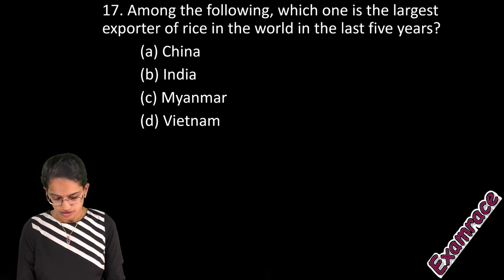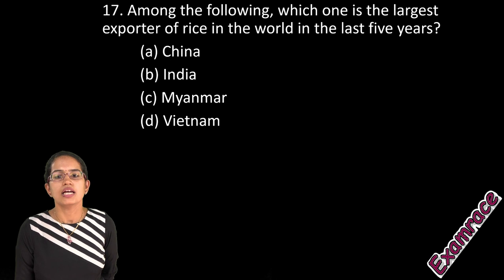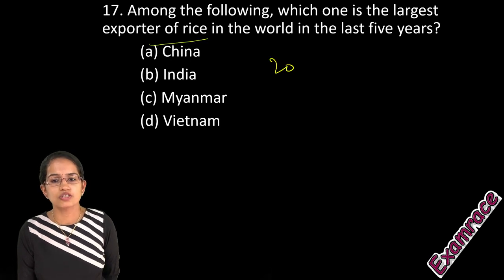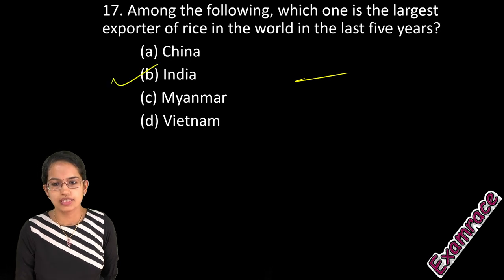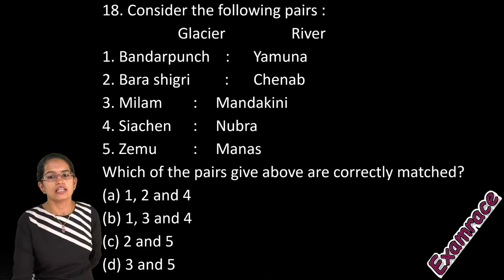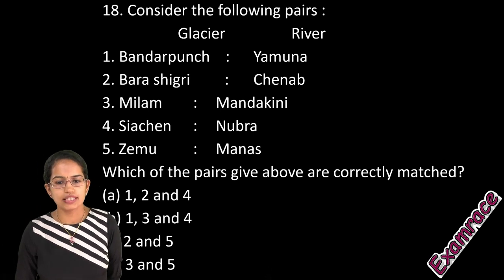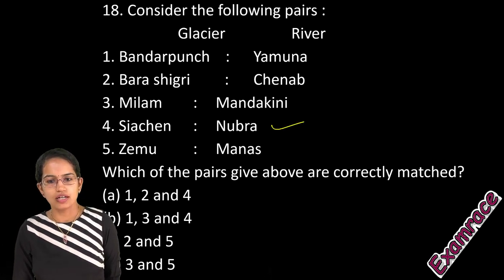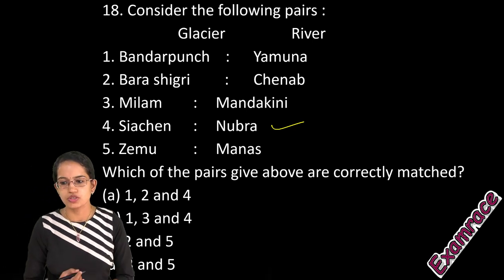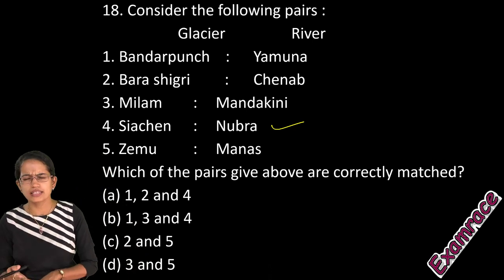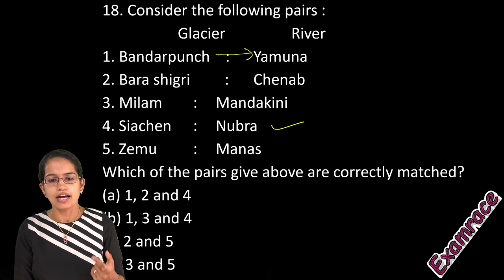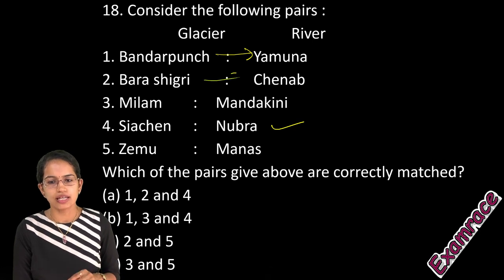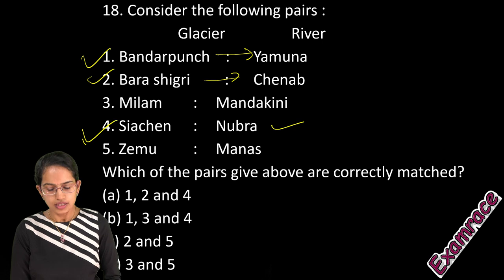India has been the largest exporter of rice since 2011–12 when it overtook Thailand — another article from The Hindu. For the glacier question: Siachen Glacier feeds the Nubra River; Bandarpunch Glacier feeds the Hanuman Ganga, which joins the Yamuna; and Barashrinki Glacier joins with the Chenab. So options 1, 2, and 4 are correct.